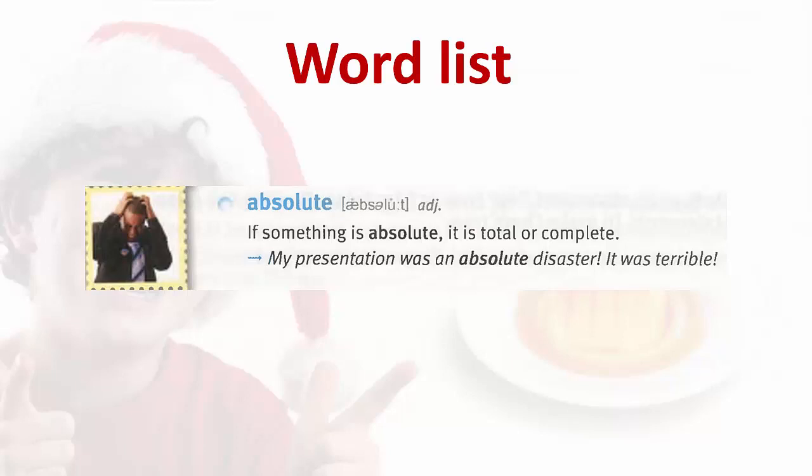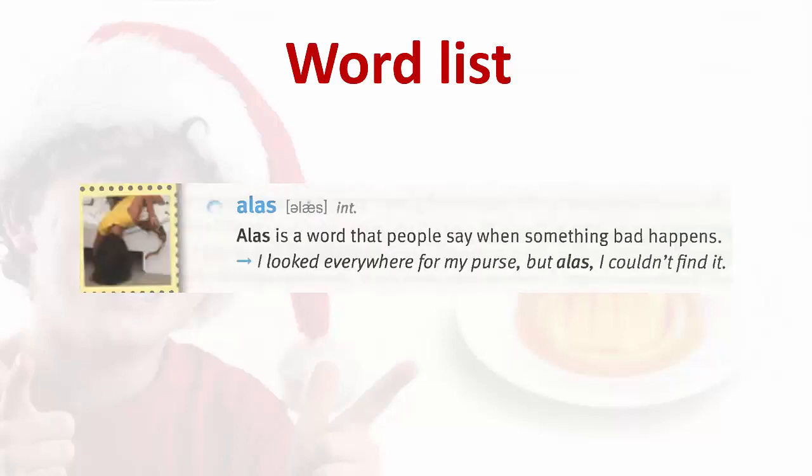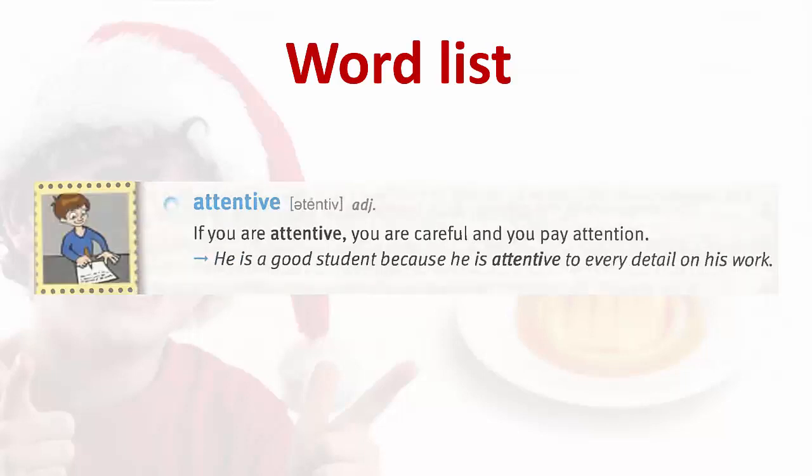Absolute. If something is absolute, it is total or complete. My presentation was an absolute disaster. It was terrible. Alas. Alas is a word that people say when something bad happens. I looked everywhere for my purse, but alas, I couldn't find it.